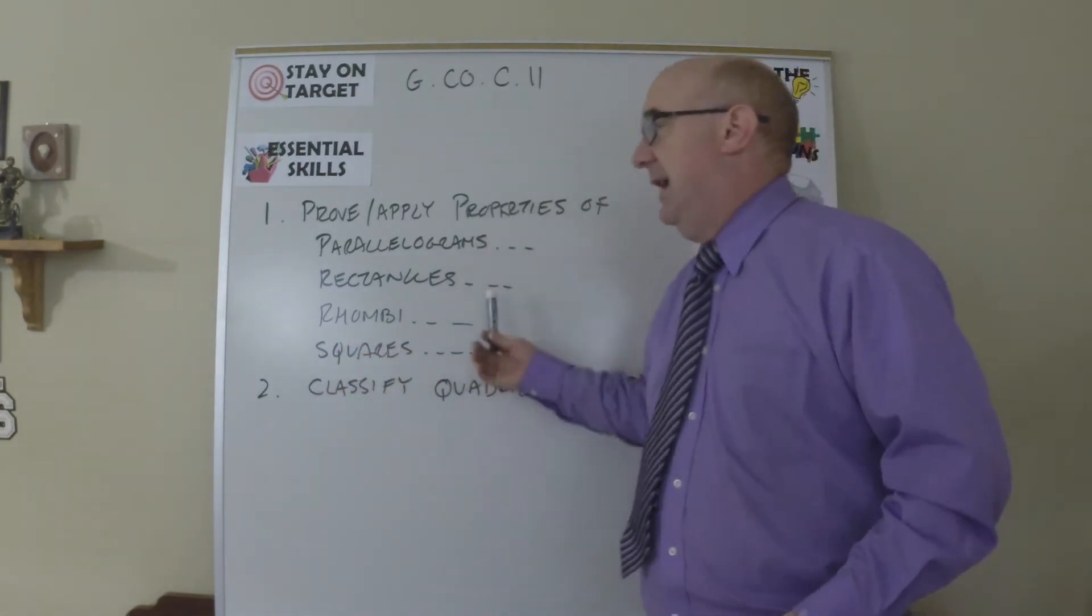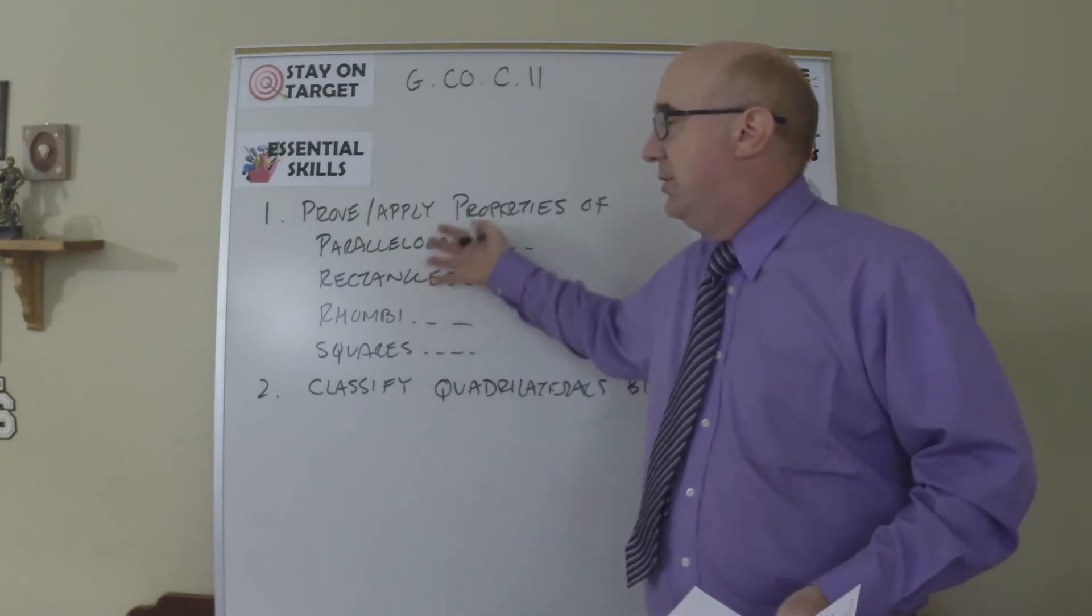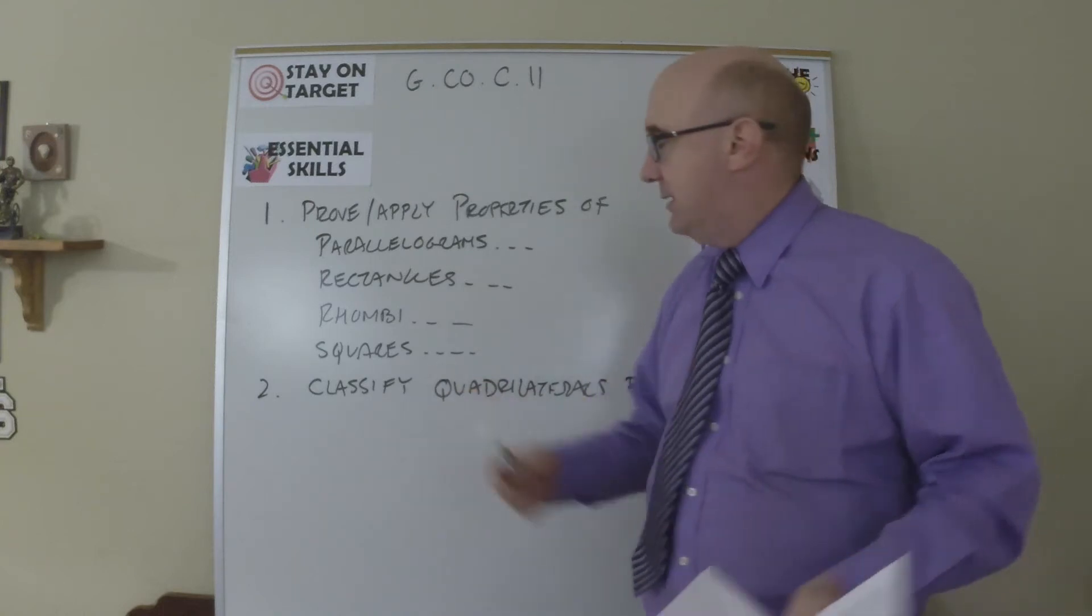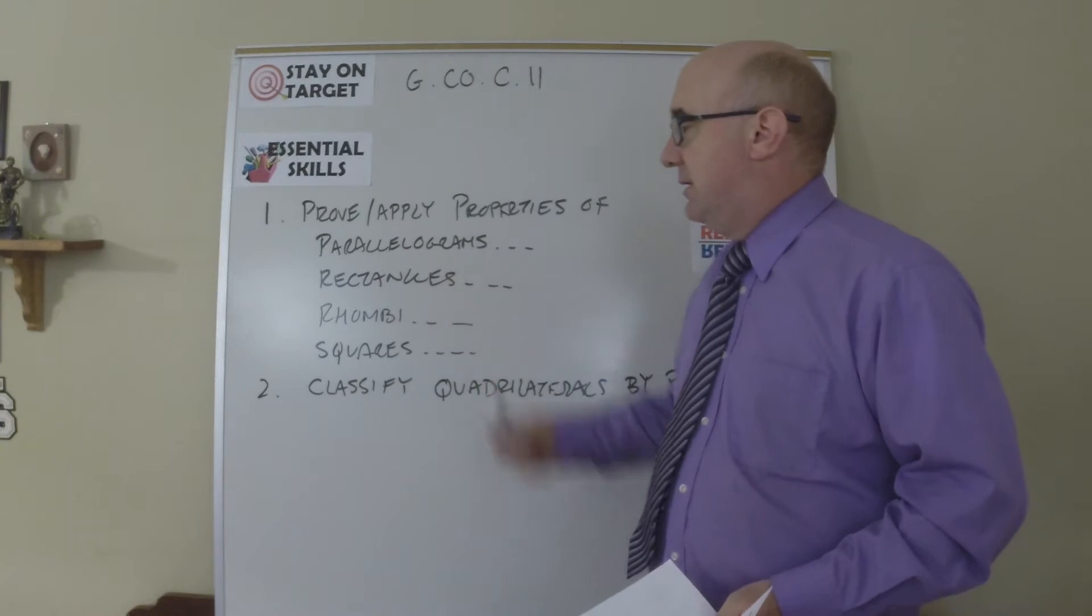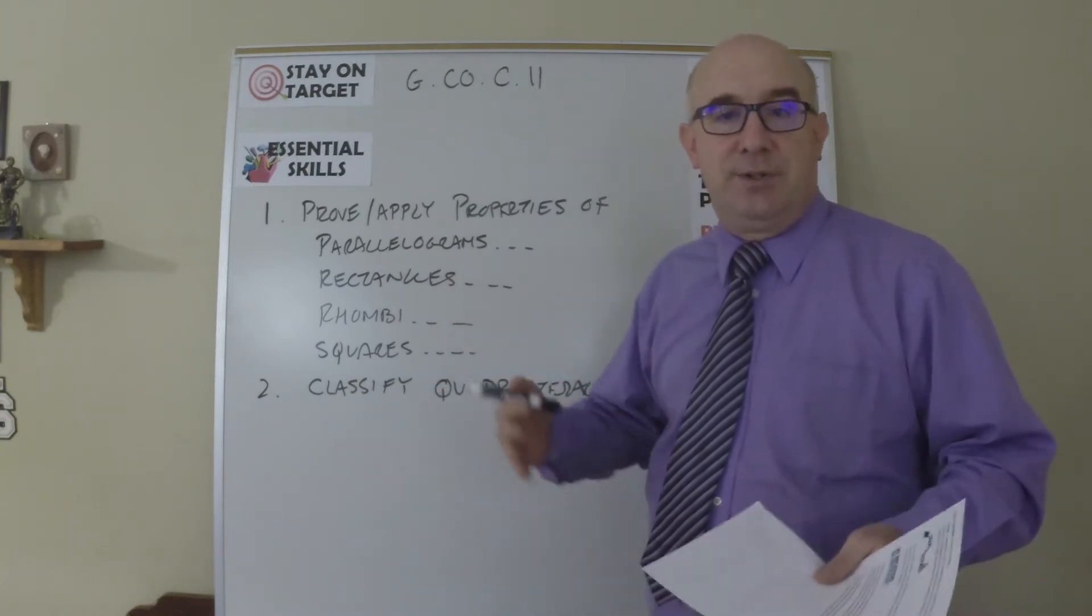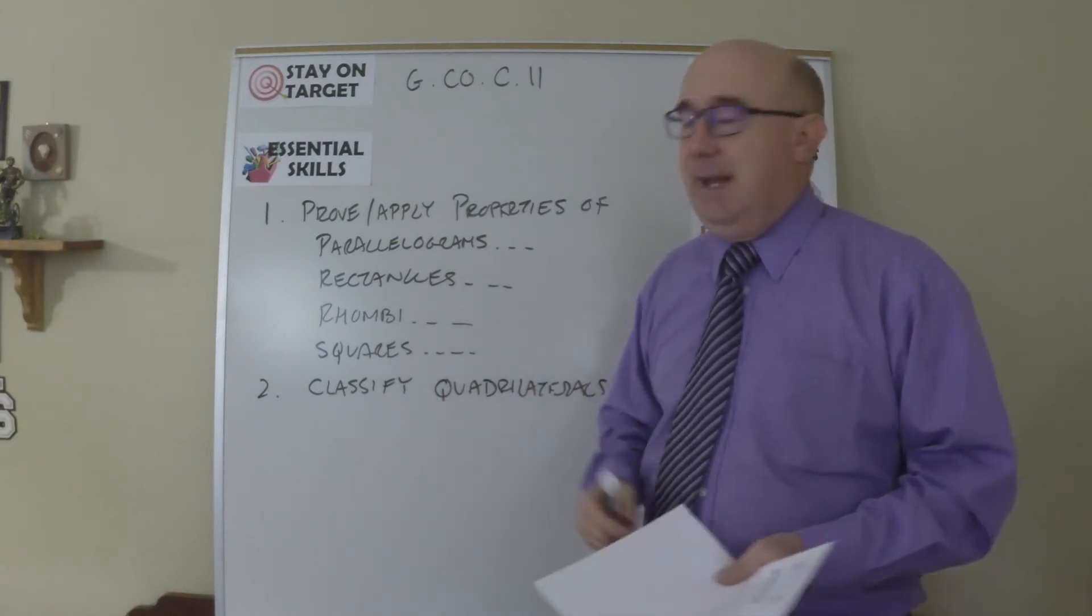We look specifically at the parallelogram family. They have a lot of interrelational things about their diagonals, sides, angles, things like that. So they're a nice thing to study and then we get into the business of classifying quadrilaterals, what type of quadrilateral is, what property does it have and so on.